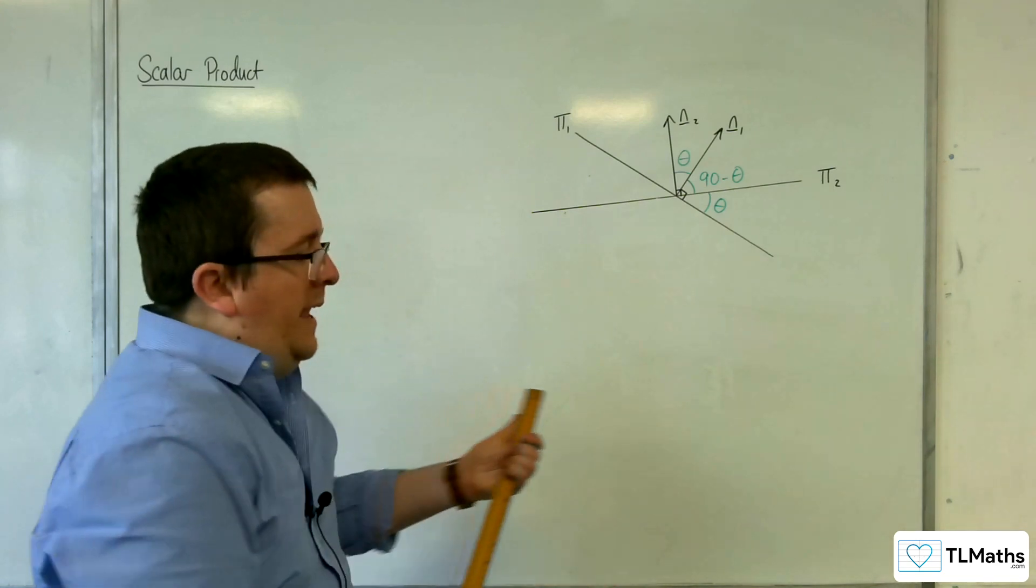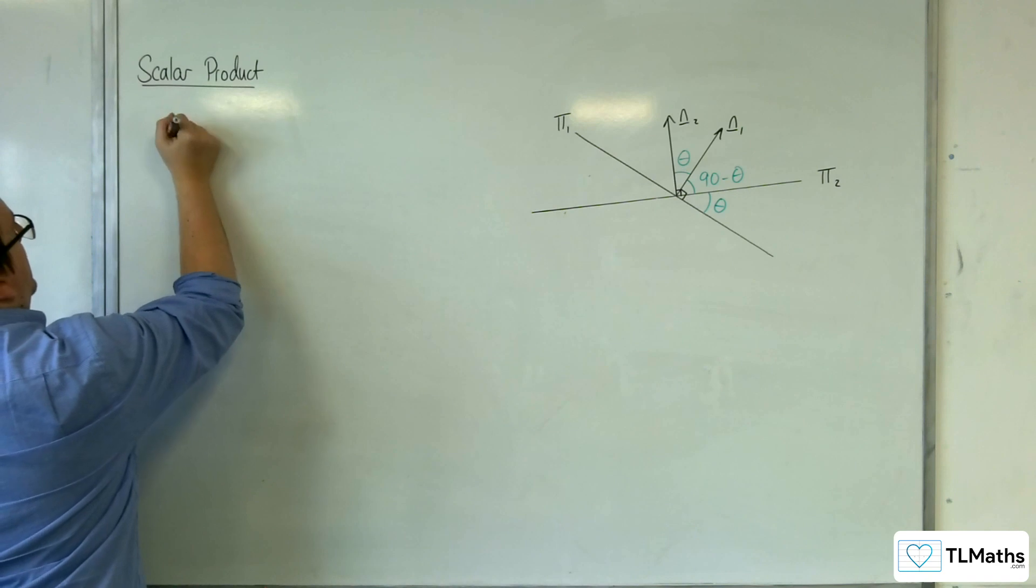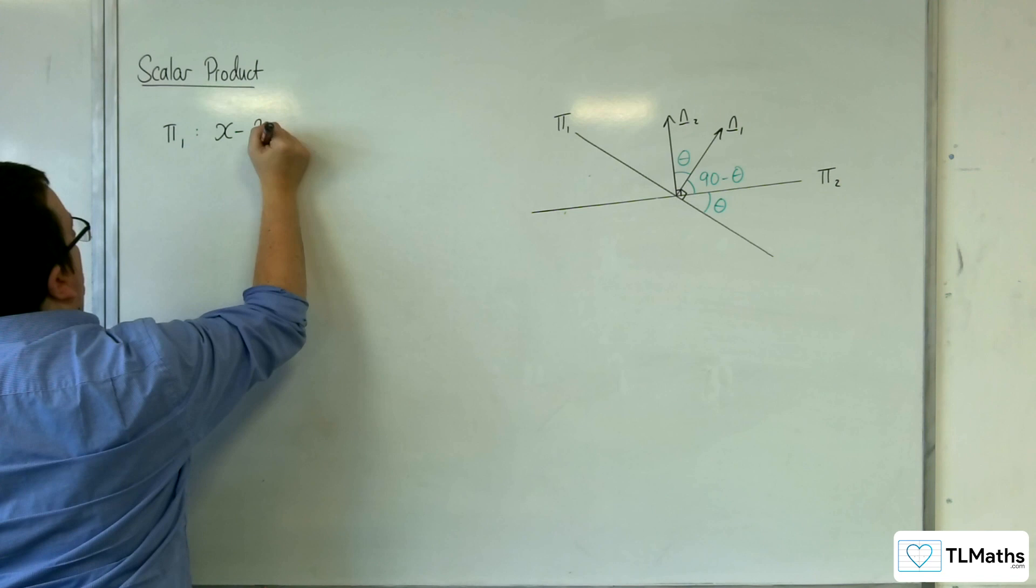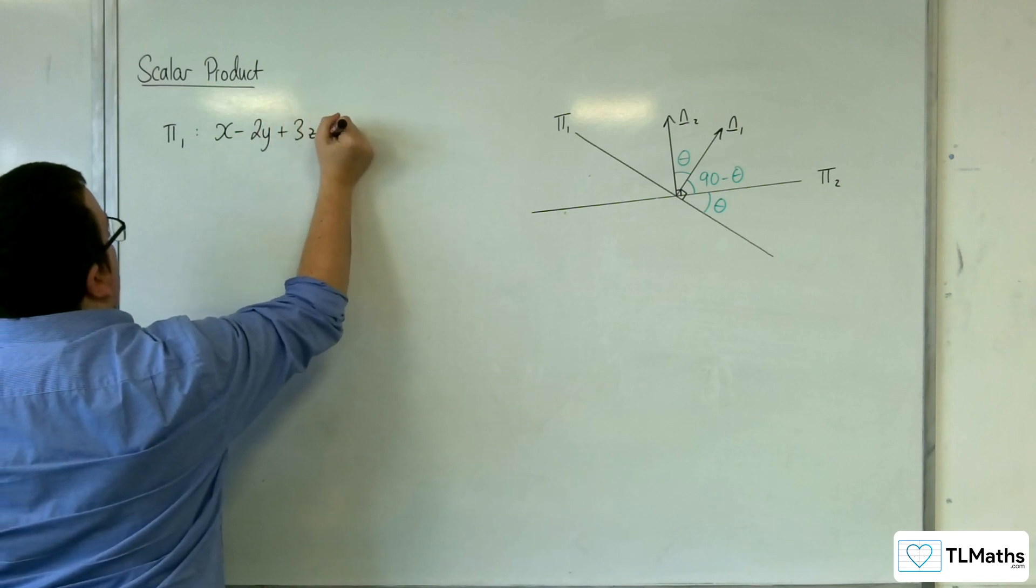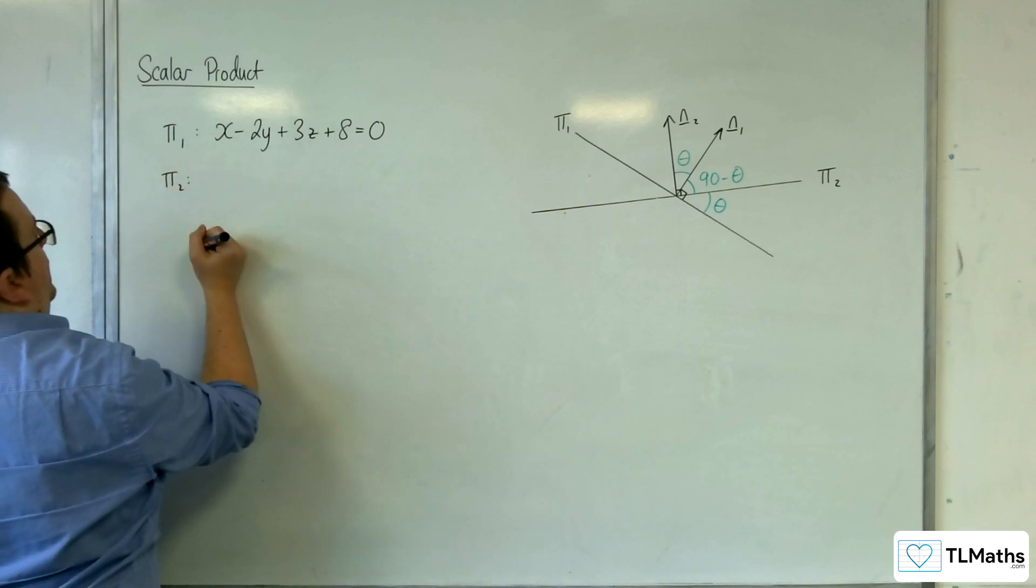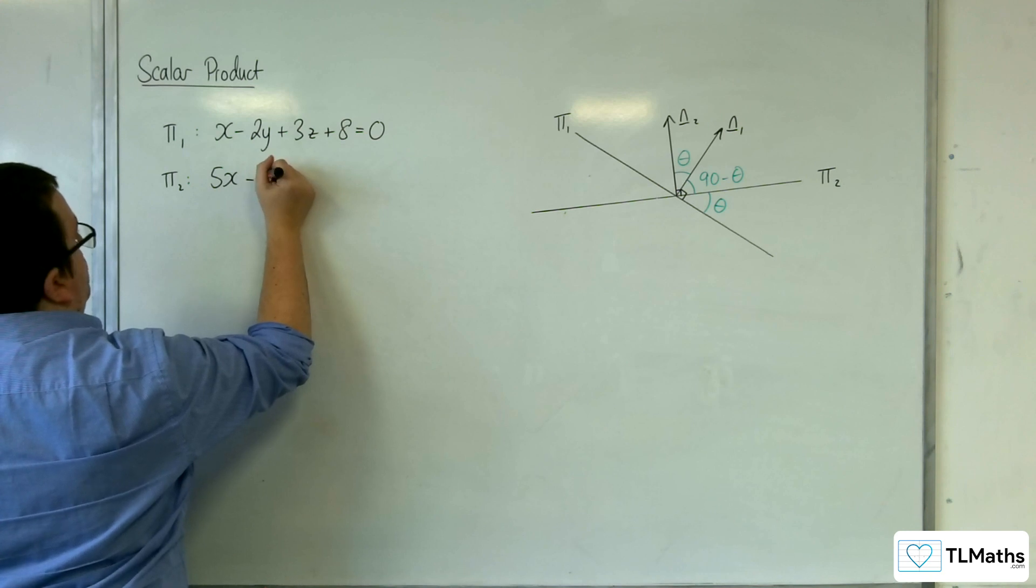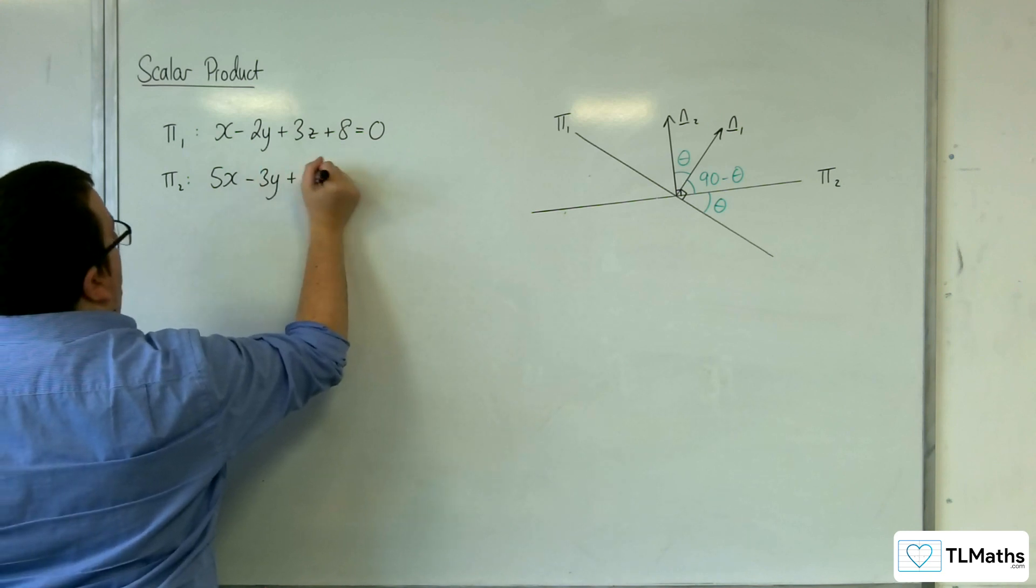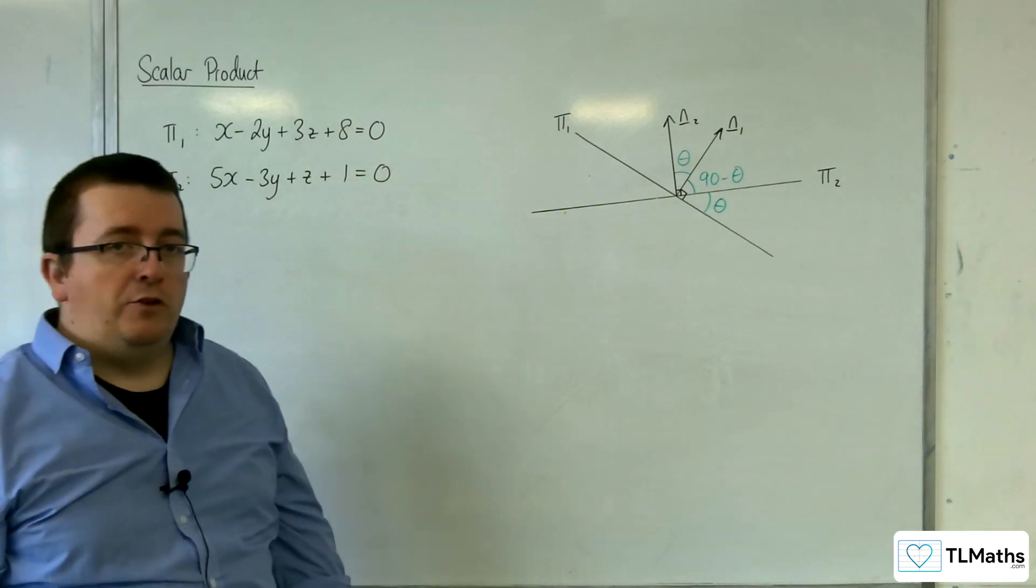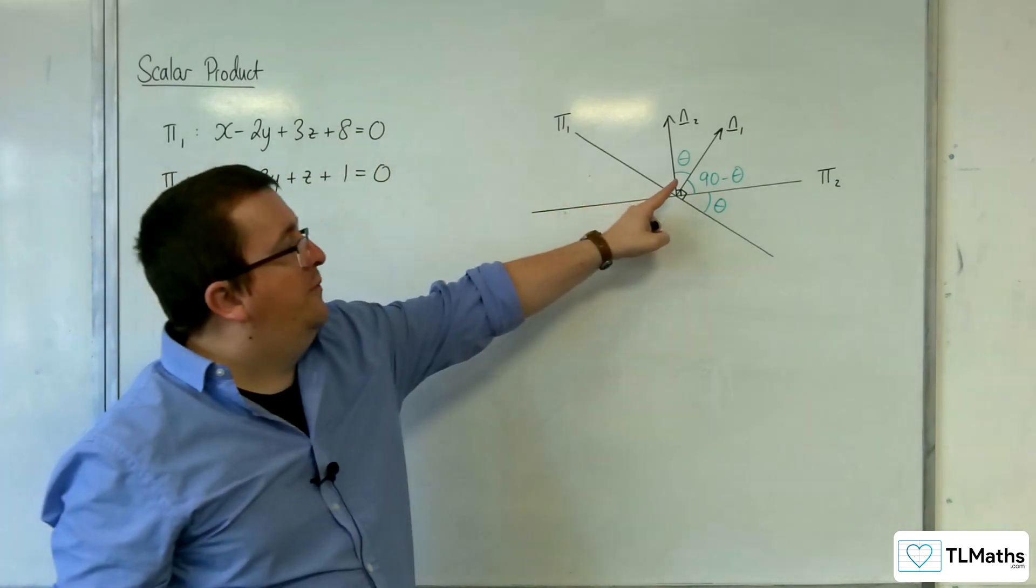So if, for example, I wanted to find the angle between pi 1, which has the equation x take away 2y plus 3z plus 8 equals 0, and pi 2 has the equation 5x take away 3y plus z plus 1 equals 0. So if I wanted to find the angle between those two planes, then all I need to do is focus in on the two normal vectors.